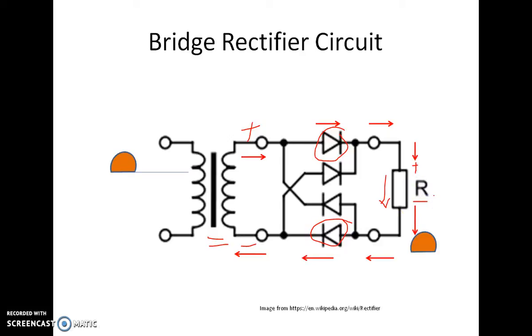In the negative half cycle, the polarity across the secondary will be negative, positive. So, this diode will be on and this diode will be on, giving the current again in the same direction, that is, positive, negative and output in the same direction. And hence, the name full wave rectifier.